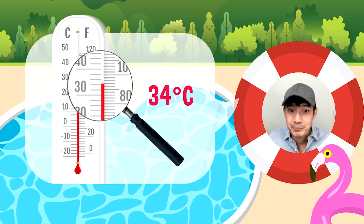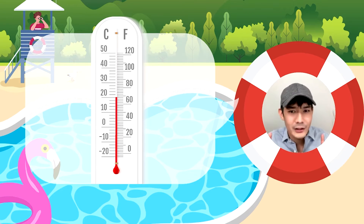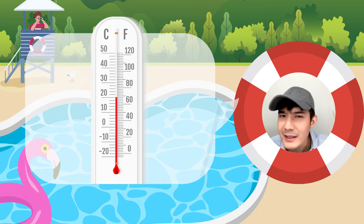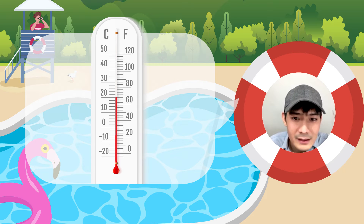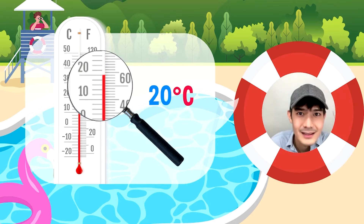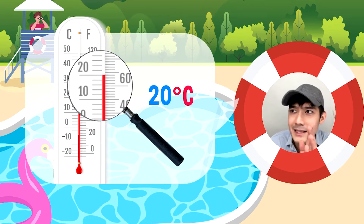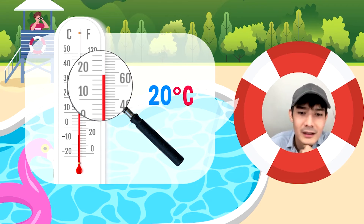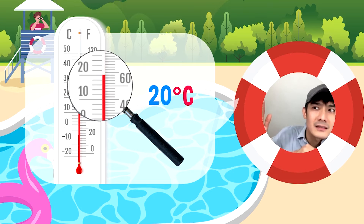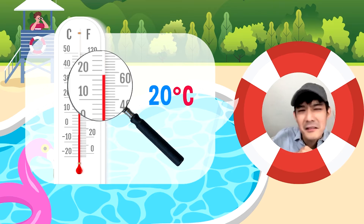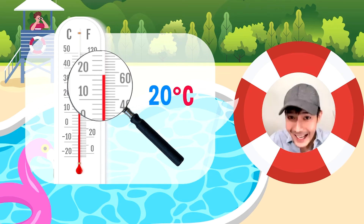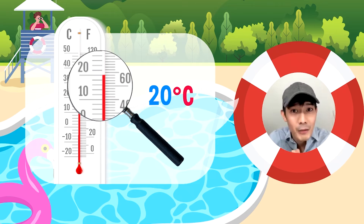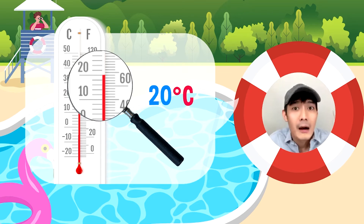Ready na ba kayo pumunta sa susunod na swimming pool? Tara! Tignan natin yung thermometer nito. Ano kaya yung temperature nung pool natin? Saktong-sakto sa 20 — 20 degrees Celsius. So, ano ba ang masasabi natin? Mas malamig ba siya o mas mainit doon sa first pool? Mas mataas na temperature, mas mainit. Tatandaan nyo yun: mas mataas na temperature sa thermometer, mas mainit. Pag mas mababa, mas malamig. Kaya, pag naging 0 degrees ang tubig, nagiging yelo.